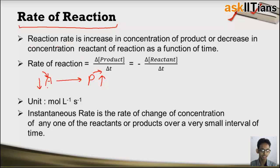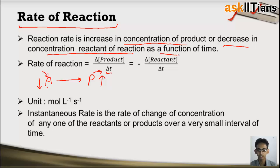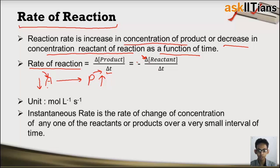Reaction rate is defined as increase in concentration of product or decrease in concentration of reactants as a function of time. The mathematical expression is: rate of reaction equals change in concentration of product with time, or change in concentration of reactants with time. Delta represents change. There is a negative sign in case of reactants, while there is a positive sign in case of products. This negative sign indicates that the concentration of reactants is decreasing with time, while delta product is increasing with time.